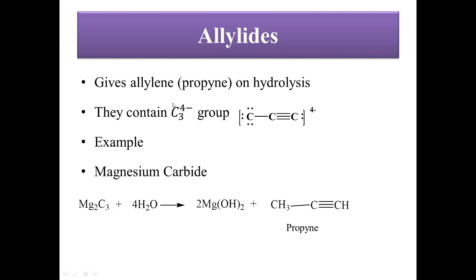The next class is allelides. Allelides are ionic carbides that produce propyne on hydrolysis. They contain a C₃⁴⁻ group — three carbons arranged as carbon single-bond carbon triple-bond carbon — carrying a 4− charge. The example is magnesium carbide (Mg₂C₃). Upon hydrolysis, magnesium carbide produces propyne (CH₃C≡CH), and hence it is classified as an allelide.